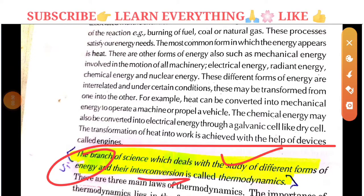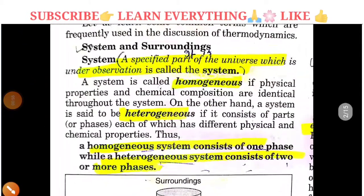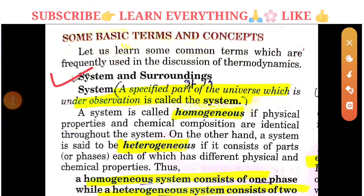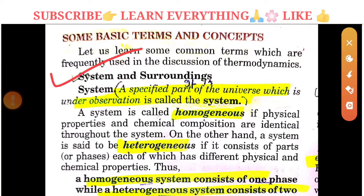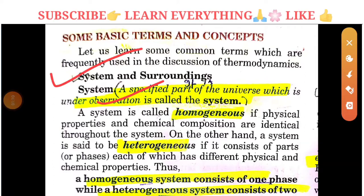We need to learn all of this in thermodynamics. First of all, we need to understand the basic terms. The first term is the system. A specified part of the universe which is under observation — any part of the universe that you observe — is called a system.